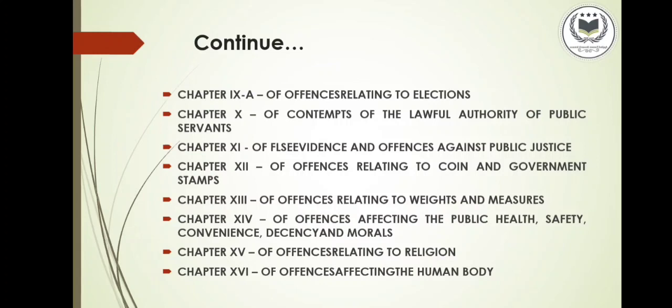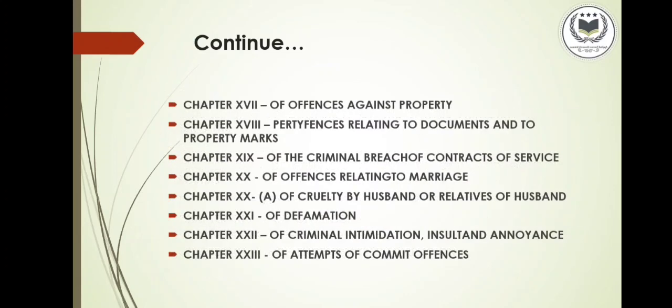Chapter 12 is Offenses Relating to Coin and Government Stamps, with 35 sections. Chapter 13 is Offenses Relating to Weight and Measures, with 4 sections. Chapter 14 is Offenses Affecting the Public Health, Safety and Convenience, Decency and Morals, with 28 sections. Chapter 15 is Offenses Relating to Religion, with 5 sections. Chapter 16 is Offenses Affecting the Human Body, with 101 sections. Chapter 17 is Offenses Against Property, with 85 sections. Chapter 18 is Offenses Relating to Documents and Property Marks, with 34 sections.